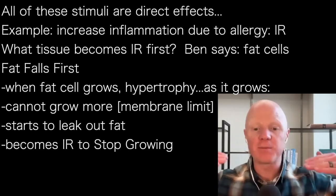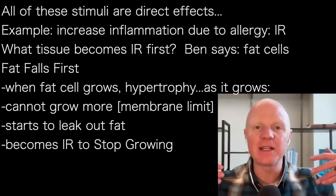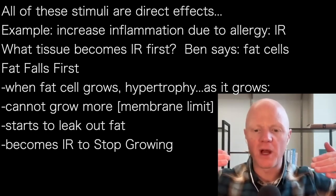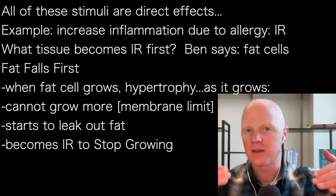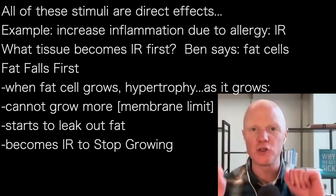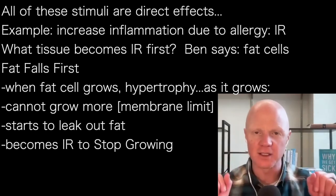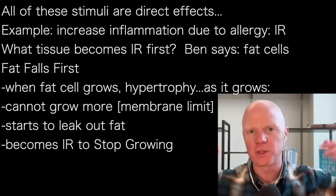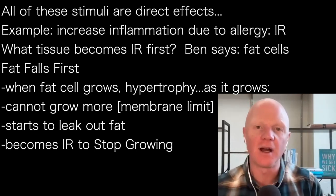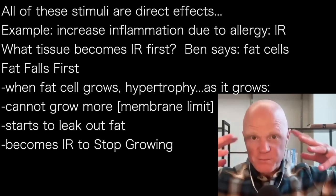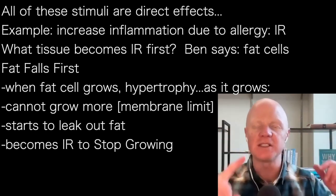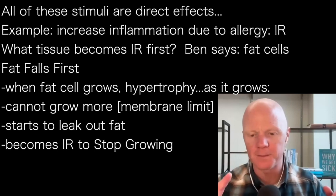This is why people, on average, can't limitlessly get fat — there's a point beyond which they can't get any fatter. There are some exceptions where people genetically have the ability to make new fat cells through multiplication, and those people can continue to get fat, but that's uncommon. So the big, hypertrophic fat cell becomes insulin resistant to stop future growth.